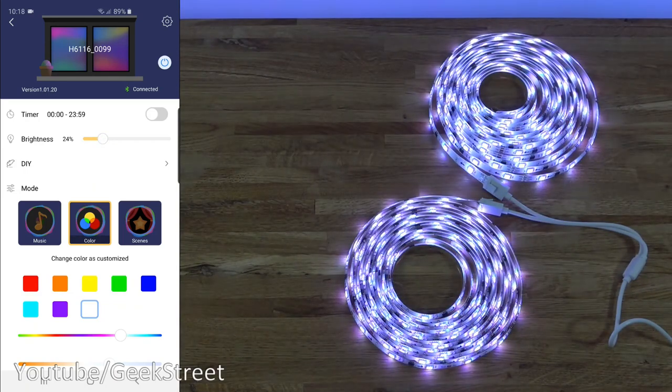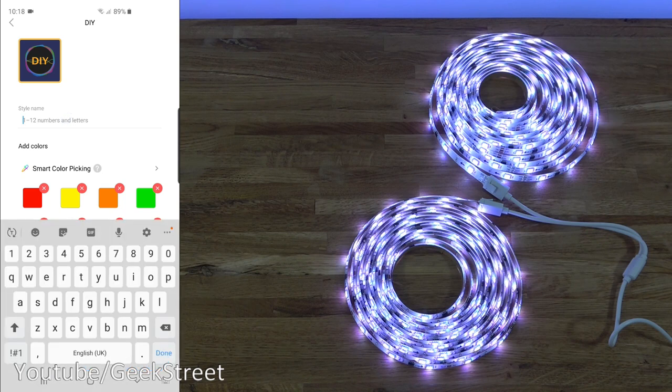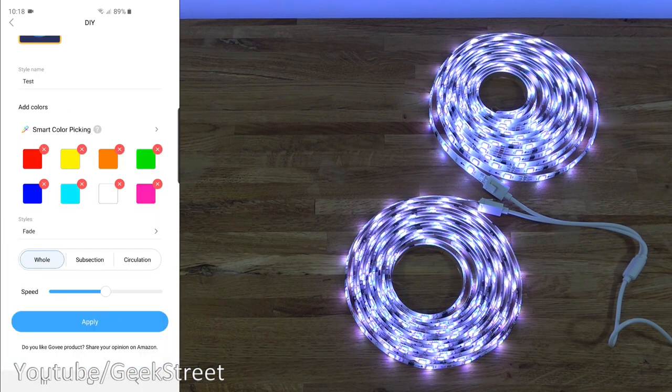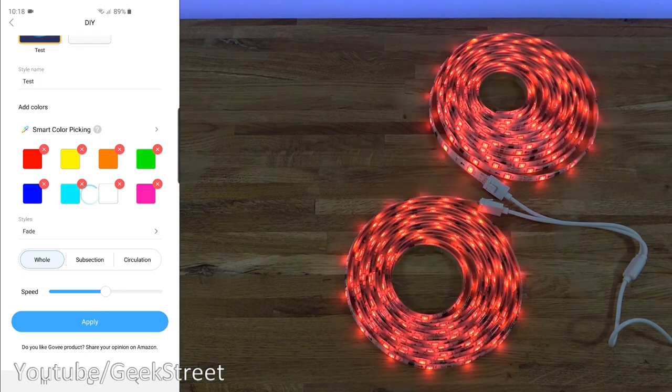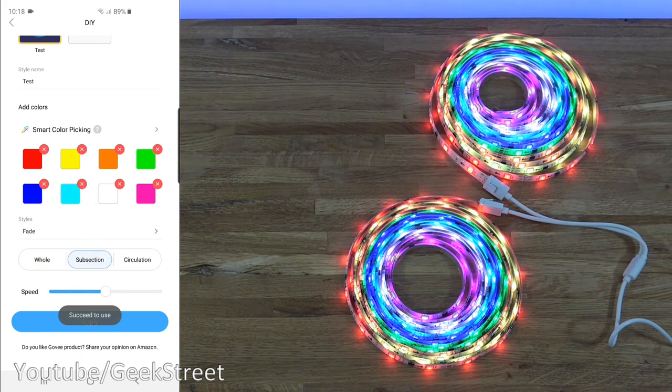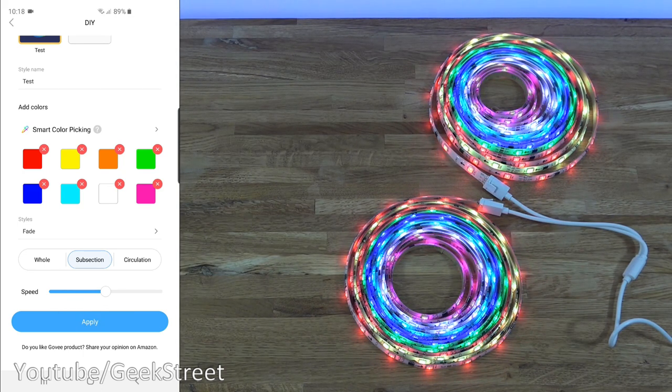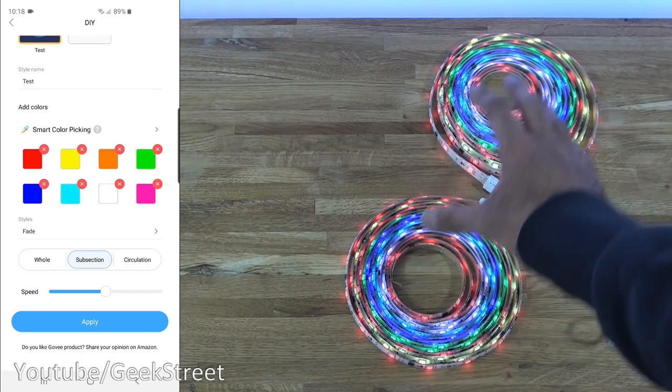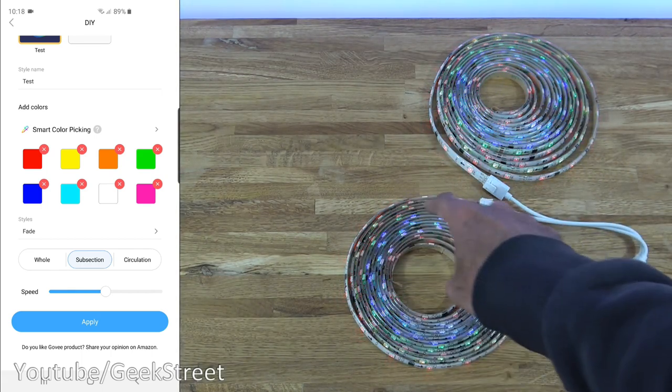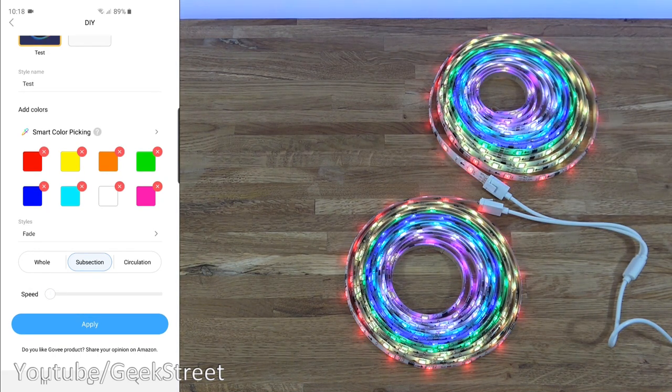Then we have DIY. If I click on that, this is where you can set up the dream color. If I pick my colors, next we just give it a name, we'll just call it test for now. Then here you've got the different options available. If I just click apply first of all it's gone for a single color. If I click on subsection, there you go, you can see the dream color in action. The way it's worked, it seems that the colors you've selected here appear on each of the strips, so it doesn't span across from here to here. Speed-wise I can take the speed down.